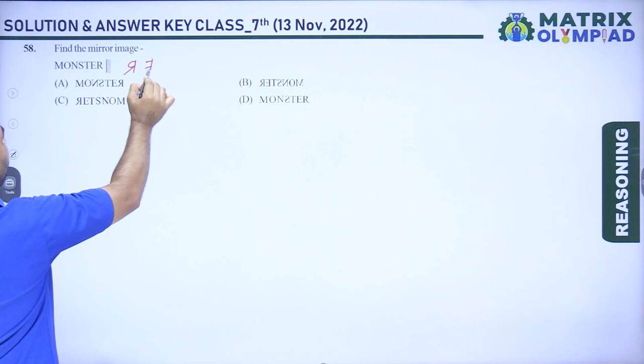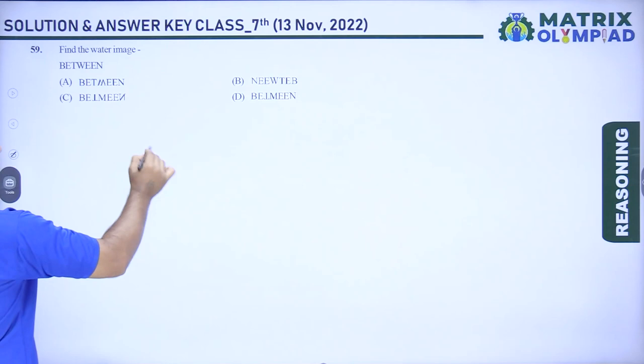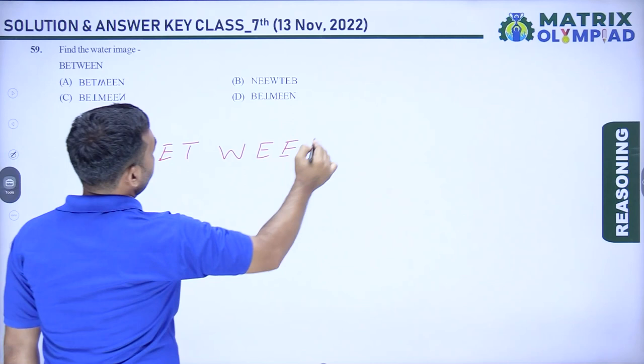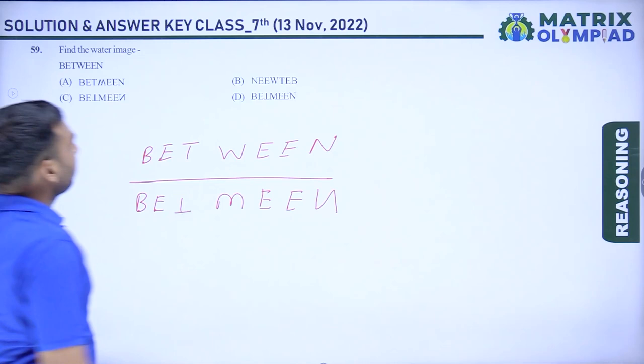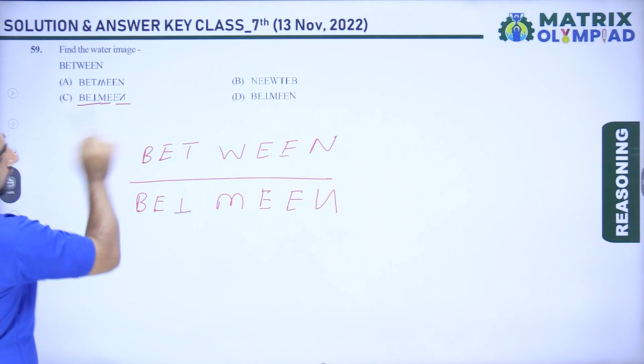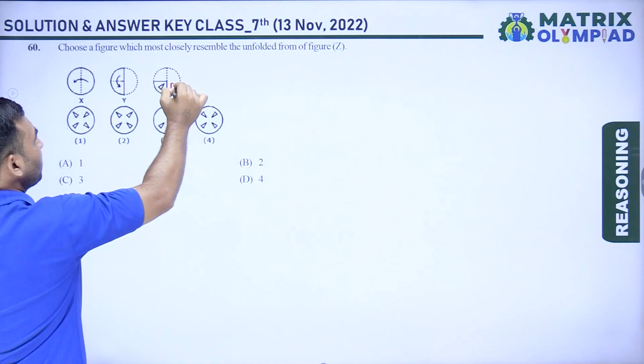Question 59: find the water (vertical) mirror image of the word BETWEEN. The water mirror image is B, E, T, W, E, E, N. Option C is correct. Final question: choose the figure which most closely resembles the unfolded form of the given folded figure. Option 4 is the correct answer.